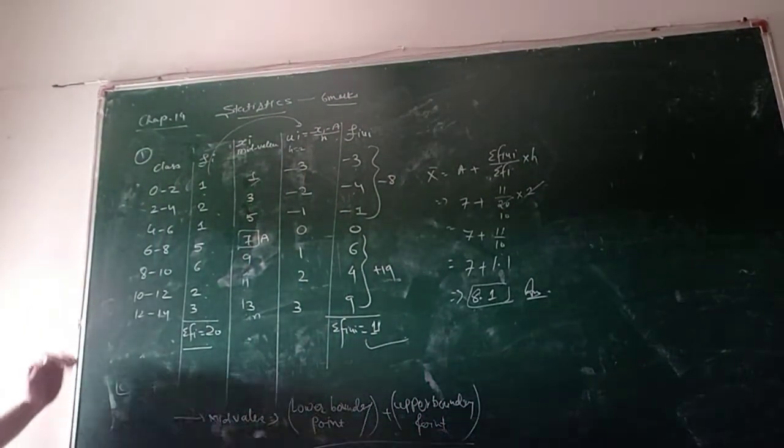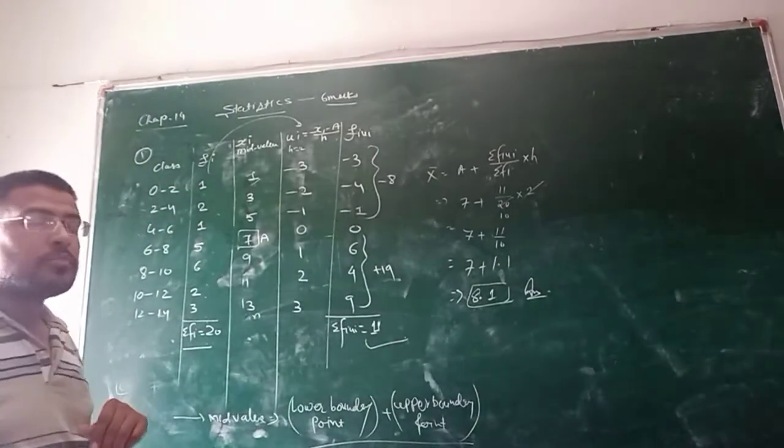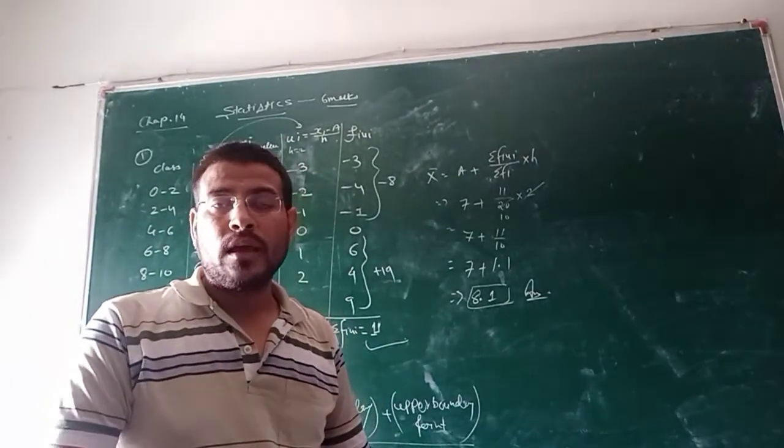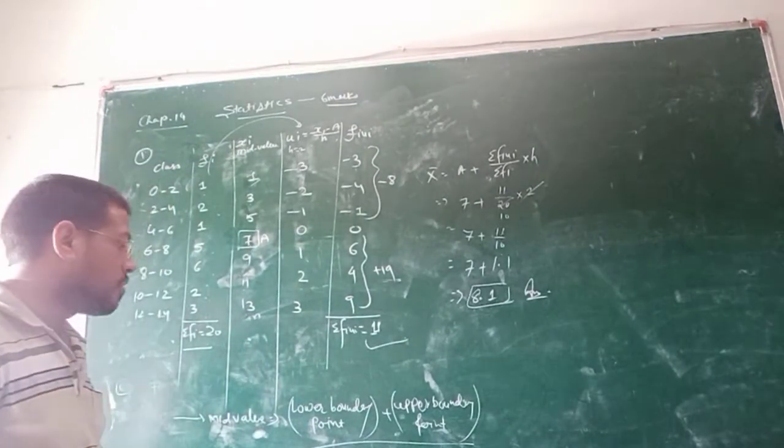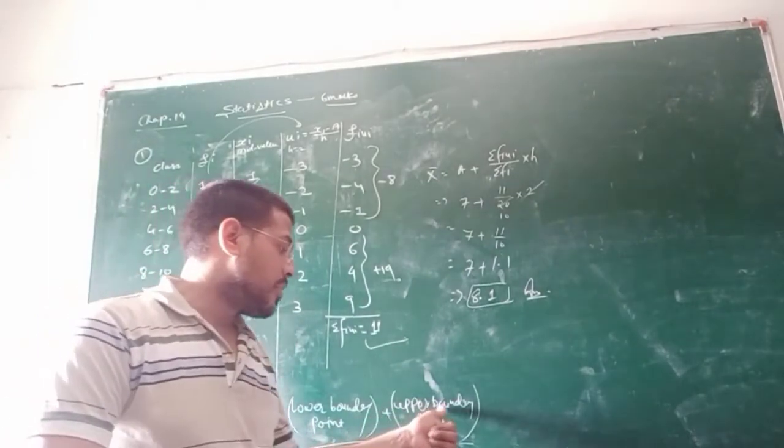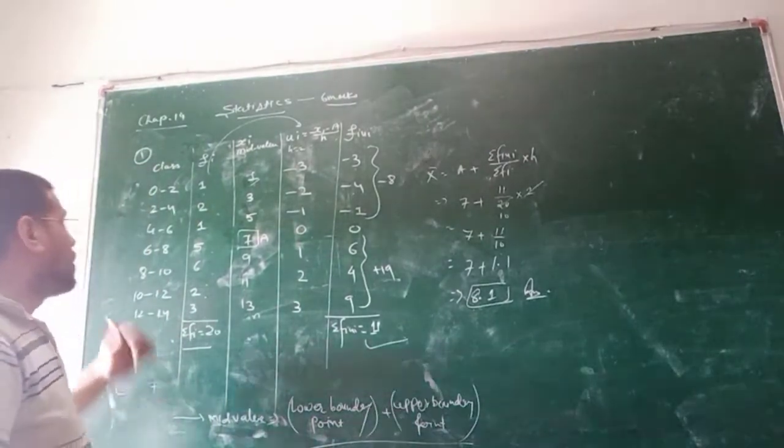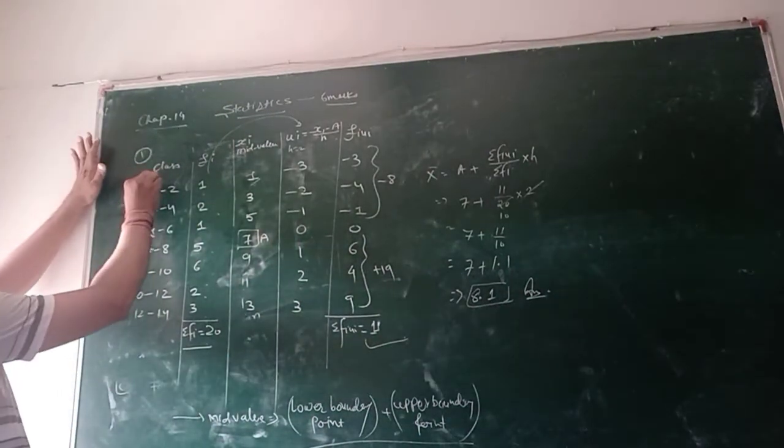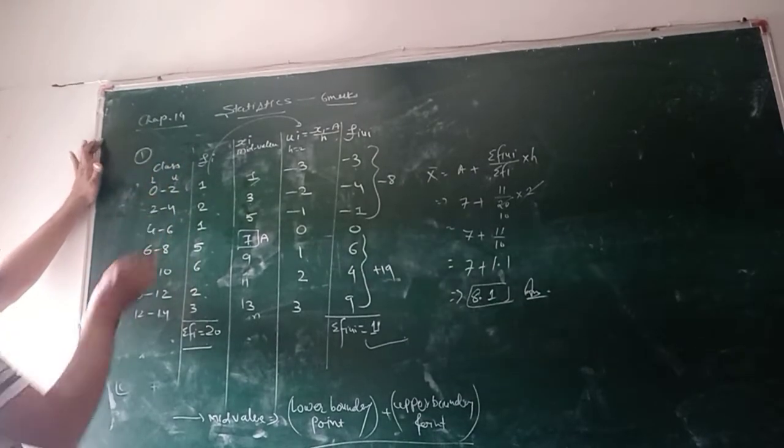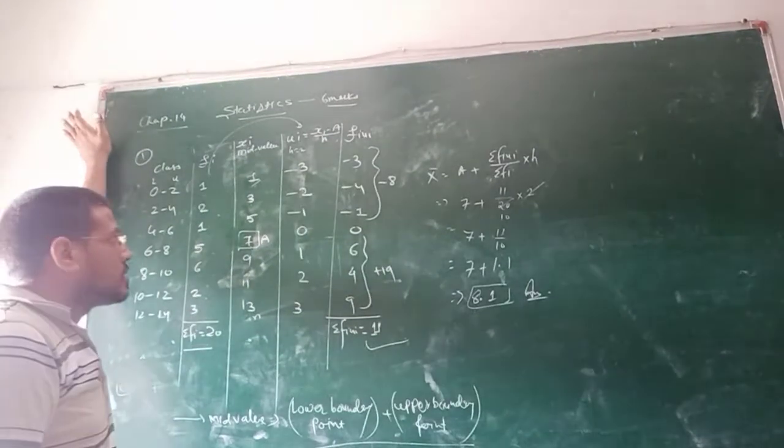Now, here you have these two things. So, if we are going to calculate mean, the first thing that is to be calculated is middle value. How to calculate middle value? We have a formula for that. Middle value is equal to lower boundary point plus upper boundary point divided by 2. By using this formula, now this one is lower boundary point, the first one, that is upper boundary point. So, add both of them, 0 plus 2, so total 2, divide by 2, it will be 1.